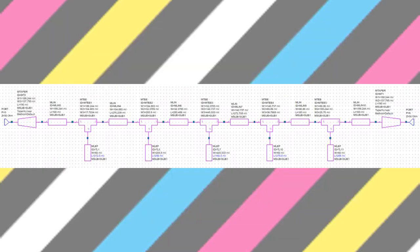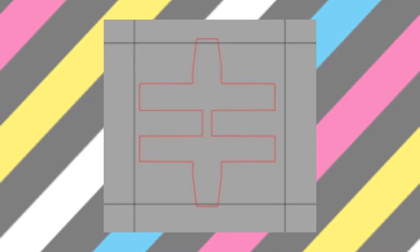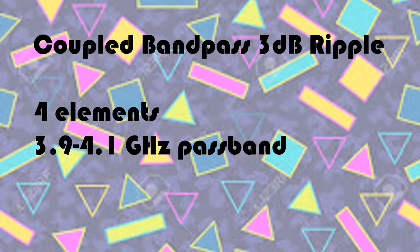To compensate the non-ideal effects of microstrip, we added discontinuity MTEE, used MLEF to model end effects of the stubs, and included taper. This is the simulated gain and return loss of the compensated low-pass filter. Finally, the physical layout was exported from Microwave Office. Thanks, Jay.